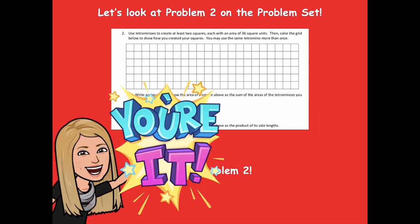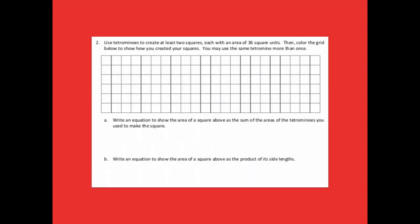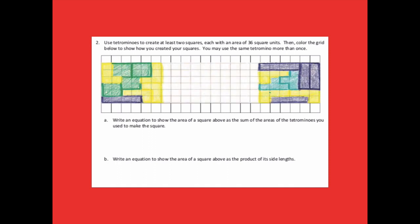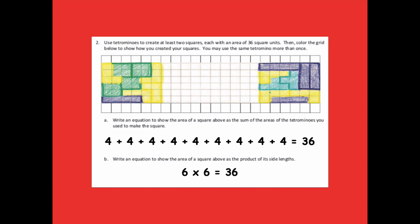Now solve problem two — pause the video, solve all of parts a and b, then click play when ready. Here's what I came up with: here are my two rectangles. The equation to show the area of the square as a sum — that's a repeated addition sentence — would be four plus four plus four plus four plus four plus four plus four plus four plus four equals 36. You should have nine fours, because nine times four is 36. To write an equation showing area as the product of side lengths: six times six equals 36.